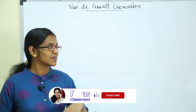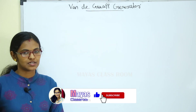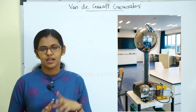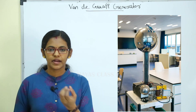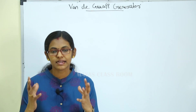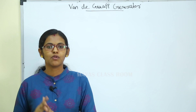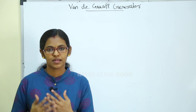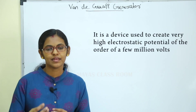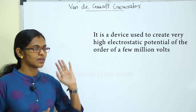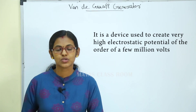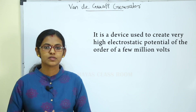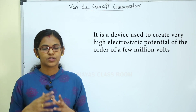We are going to discuss the topic of the Van de Graaff generator. The Van de Graaff generator is a high-potential generator designed by a scientist. It is a device used to create very high potential of the order of 6 to 10 million volts, or 6 to 10 megavolts potential difference.